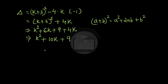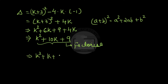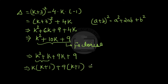Let us factorize this, since we need the value of k. We factorize this quadratic in terms of k by splitting the middle term. We split 10k as k plus 9k. Combining: k(k plus 1) plus 9(k plus 1), which gives us (k plus 1)(k plus 9). So our discriminant is delta equals (k plus 1)(k plus 9).